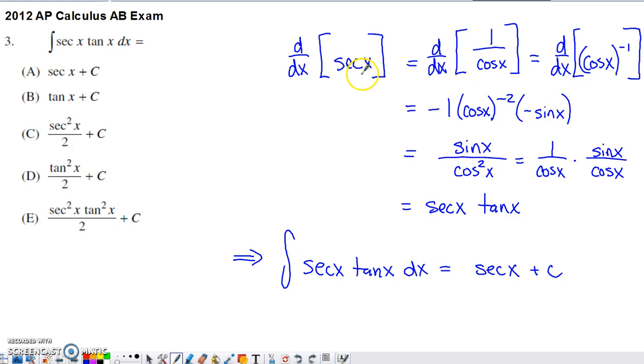you should know that secant of x can be rewritten as one over cosine of x. If you try to take the derivative of this, you've got a couple options. You can either go with a quotient rule of it within this form.